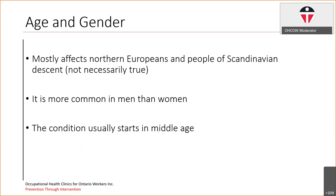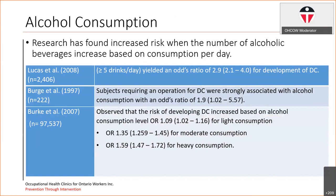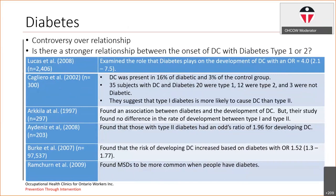With respect to age and gender, initial research was stating that it mostly affected Northern Europeans and people of Scandinavian descent. However, this is not necessarily true. It is more common in men, and it does usually seem to start in middle age. For alcohol consumption, the research has found an increased risk when the number of alcoholic beverages increases based on consumption per day. With respect to diabetes, there's a bit of controversy over the relationship — is there a stronger relationship between the onset of Dupuytren's and type 1 or type 2 diabetes.